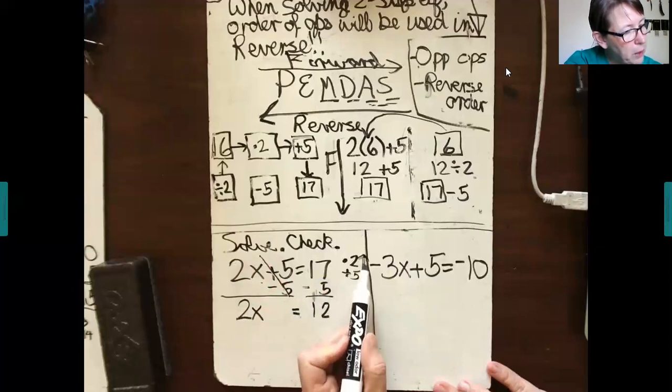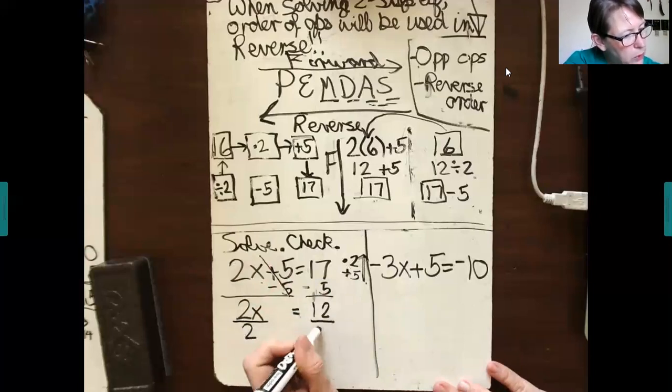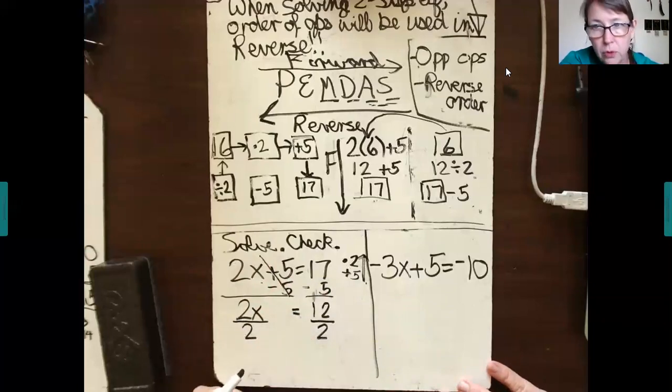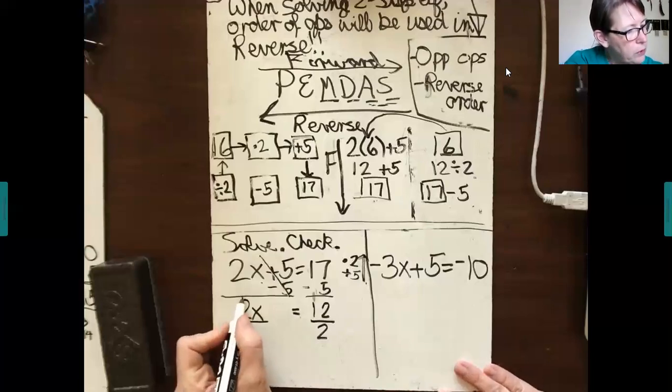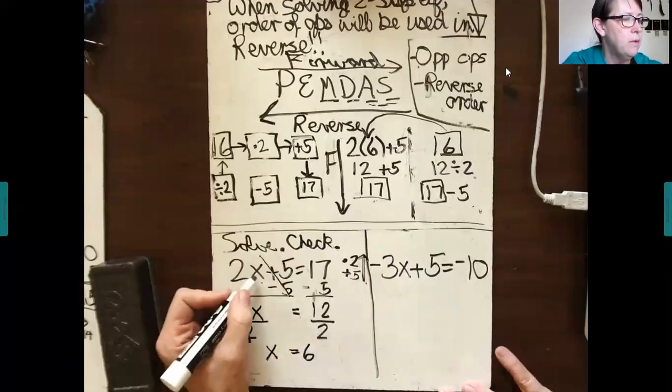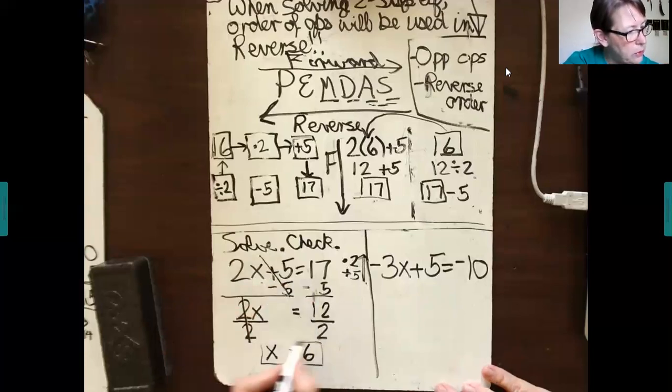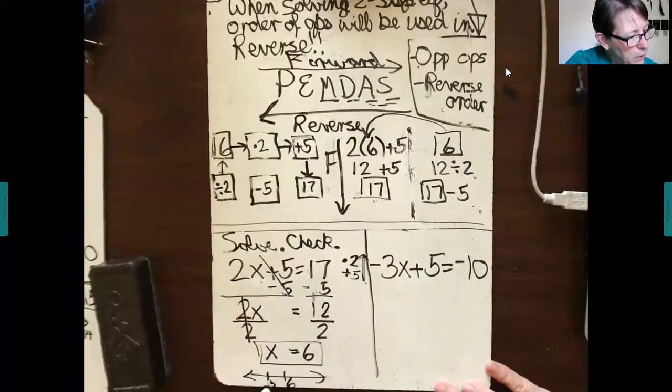I copy 2x down here equals 17 minus 5 is my operation. 17 minus 5 is 12. Bring down the 1. Okay, oh, we're almost done. Now we took care of this step. Instead of multiplying by 2, I'm going to do the opposite operation. I'm going to divide each side by 2. What I do to one side I must do to the other. 2 over 2 becomes 1. Anything over itself is 1. 1 times x is x. 12 divided by 2 is 6. Let's go check it out. 2 times 6 is 12 plus 5. Yes, that is 17. So this is the correct solution. You can show it on the number line.